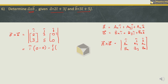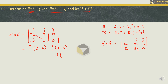For the i component: (3×0 - 5×0) = 0. For the j component (change sign): -(2×0 - 3×0) = 0. For the k component: (2×5 - 3×3) = 10 - 9 = 1. So the i component is 0, j component is 0, and k component is 1. The answer is k̂.